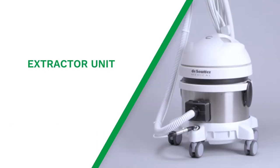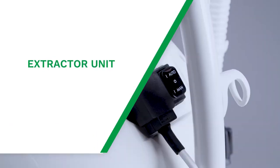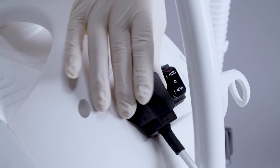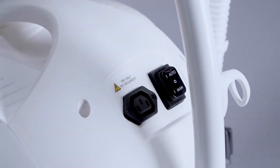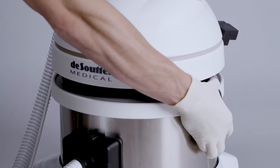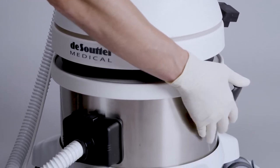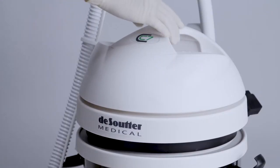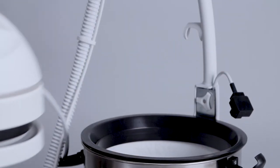I'm now going to talk you through the features of the extractor unit. Firstly, disconnect the extractor from the power supply using the plug at the back. You can then release the clips on the side of the system before removing the unit and placing it to one side.